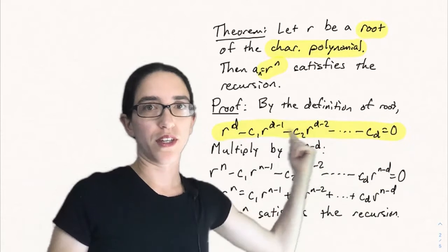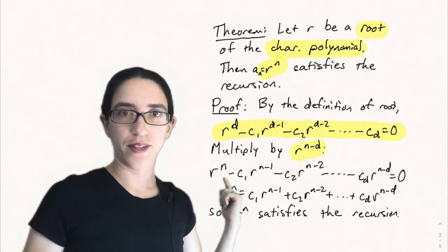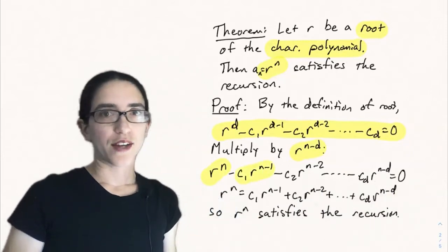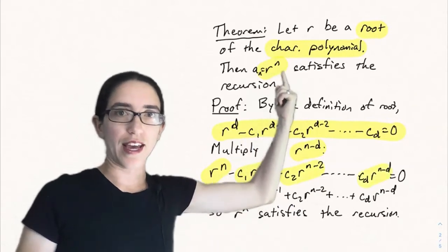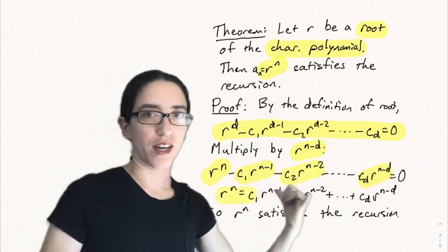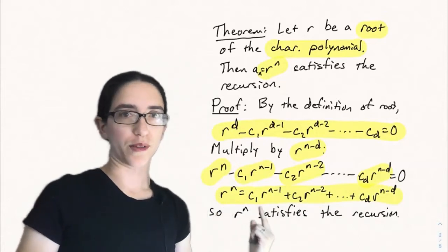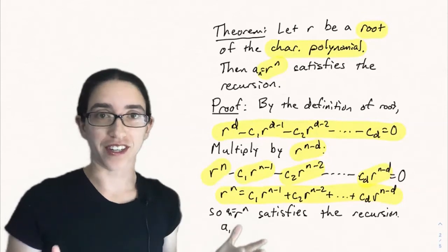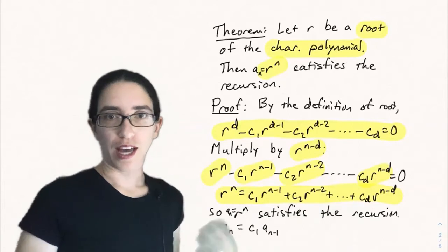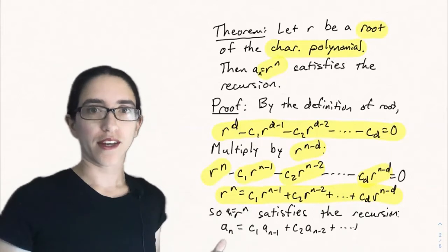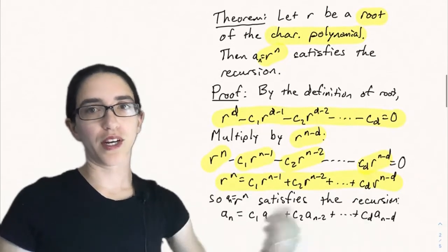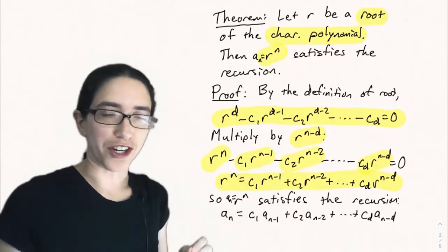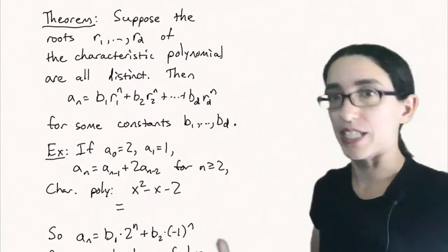Moving the negative terms to the other side gives r^n equals c1·r^{n-1} plus c2·r^{n-2} down to c_d·r^{n-d}. That's exactly what you get when you plug a_n equals r^n into the recursion. So r^n satisfies the recursion, but it doesn't mean the sequence equals r^n — because of the initial values, it's just some sequence that satisfies the recursion.